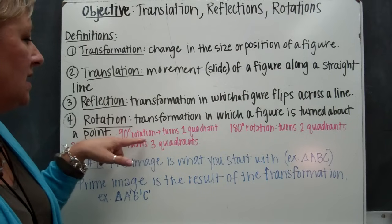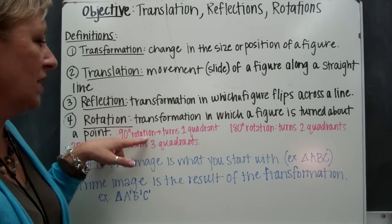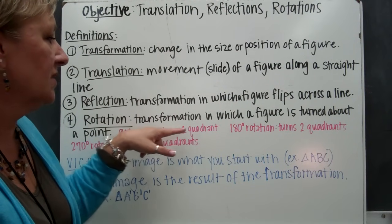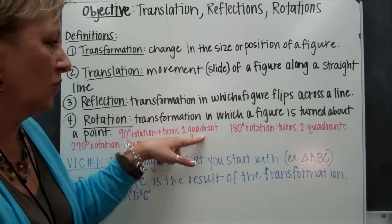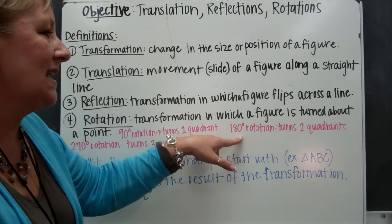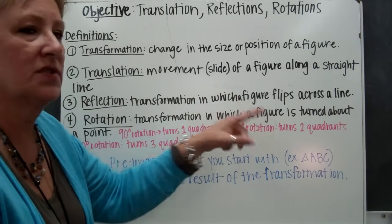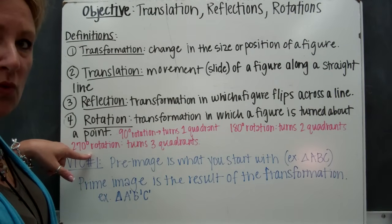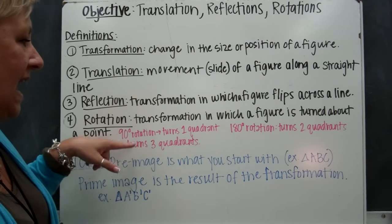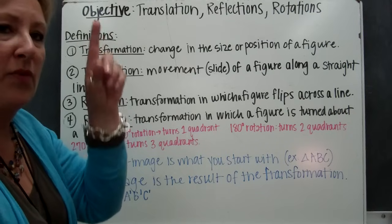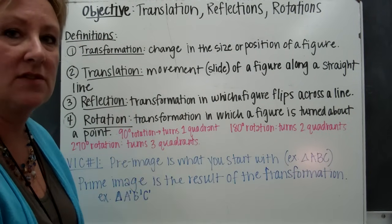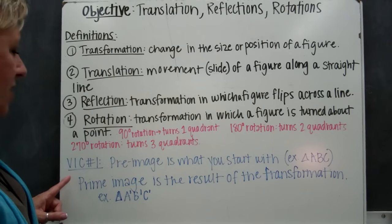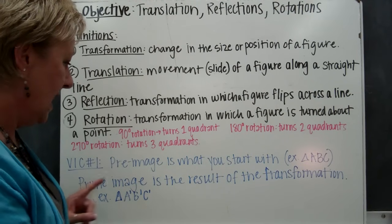For example, a 90 degree rotation is going to turn it one quadrant on the quadrant plane. A 180 degree rotation turns it two quadrants. 270 degrees will rotate it to the third quadrant. And if you do 360 degrees, you get it right back to the place where you started. Very important concept number one: